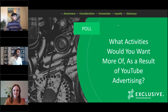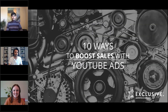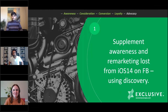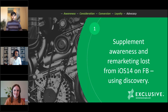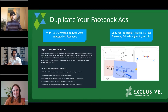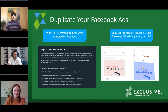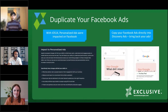With that, we dive right into our 10 ways. Way 1: How bummed was everyone when iOS 14 came out and so much of Facebook remarketing was gutted? Google had already created an ad type with great influence on YouTube called Discovery. With iOS 14, it made it harder to remarket and harder to track sales that came from Facebook.